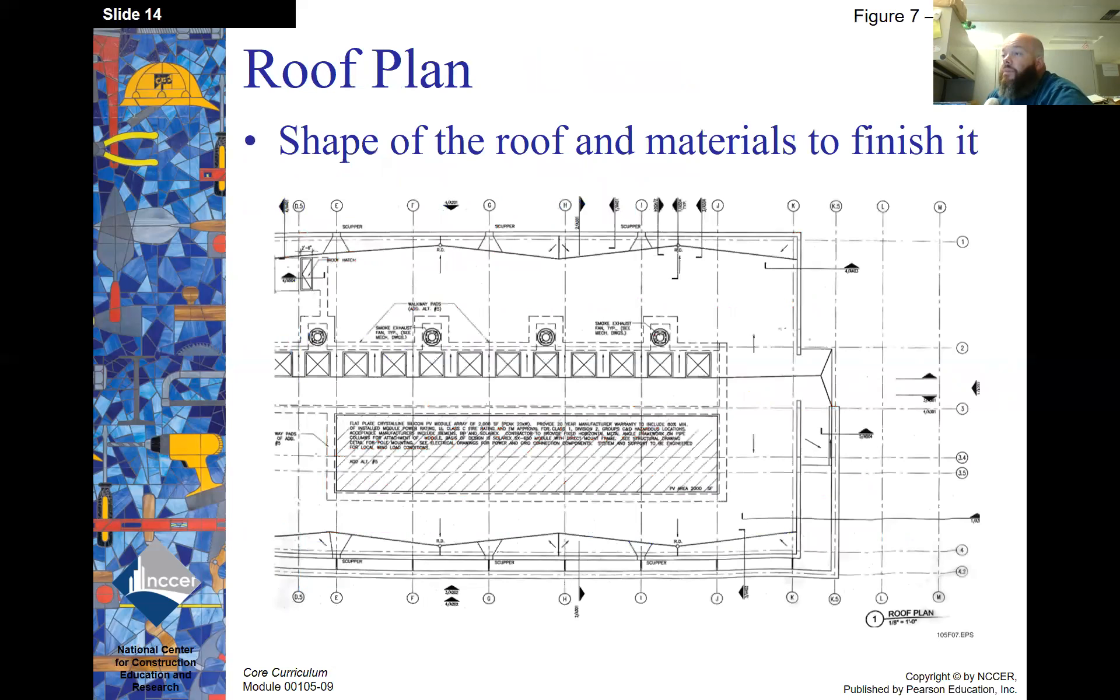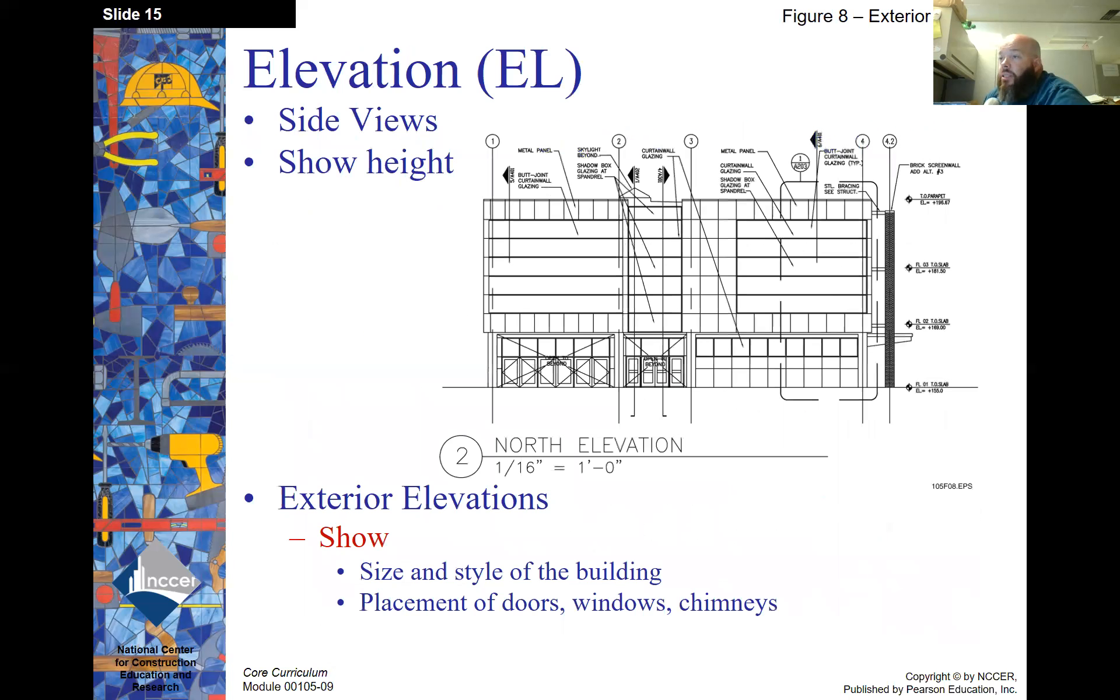The roof plan, the shape of the roof and the materials to finish it. And elevation, these are side views that show the height. And exterior elevations, they show the size and style of the building, placement of doors, windows, and chimneys as well.